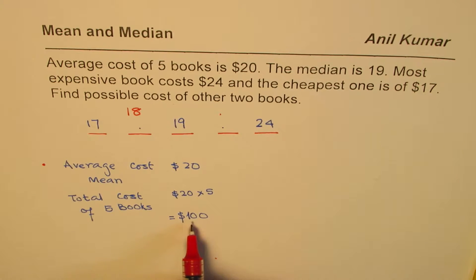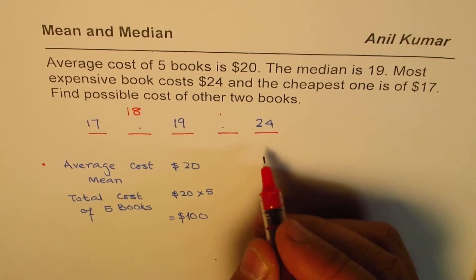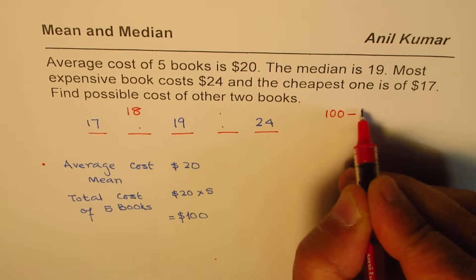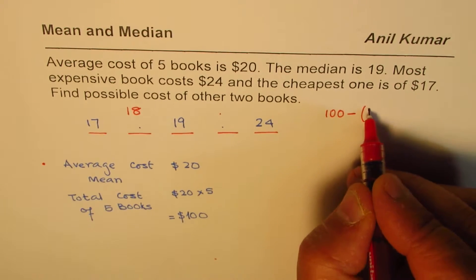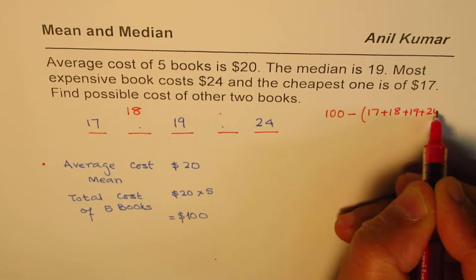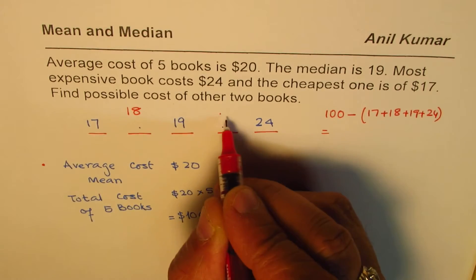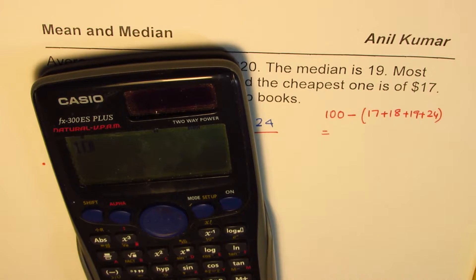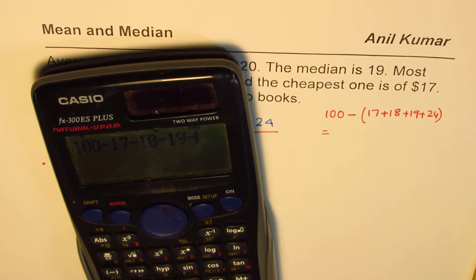Total is 100. So in this particular case, this cost should be 100, take away the sum of all these, that is 17 plus 18 plus 19 plus 24. That should be the cost of this book. So let's calculate this or we can just straight away 100, take away 17, take away 18, take away 19 and take away 24.